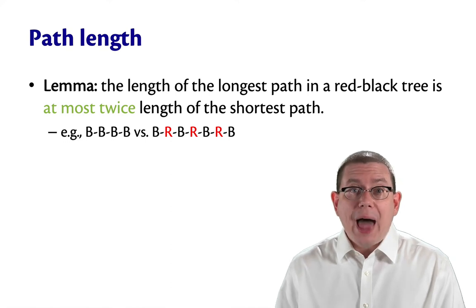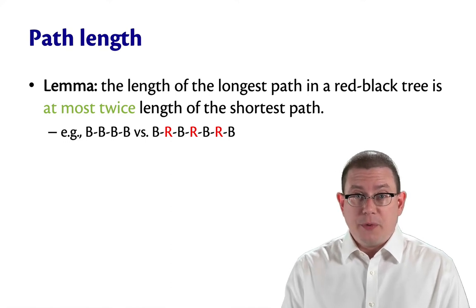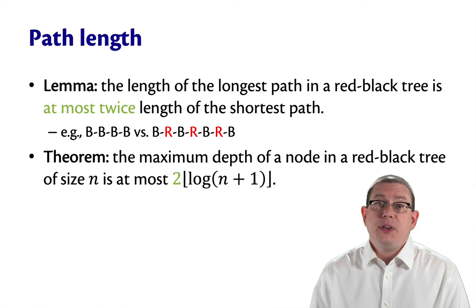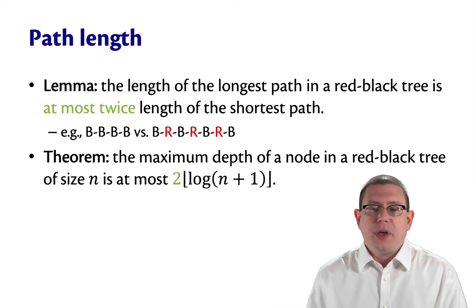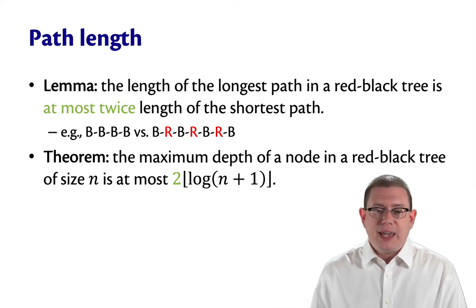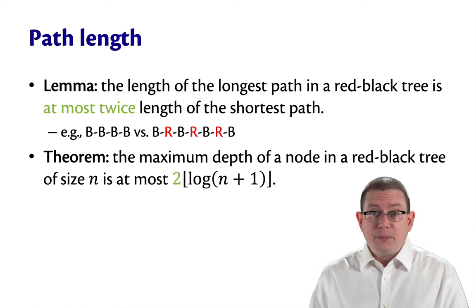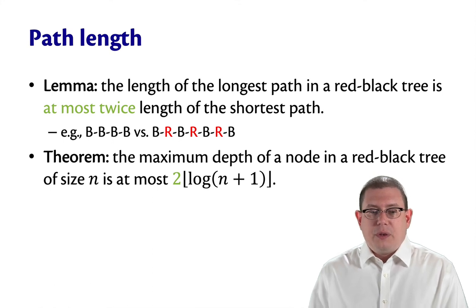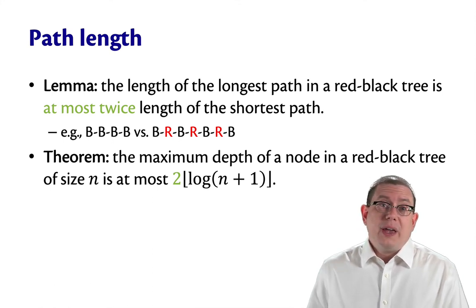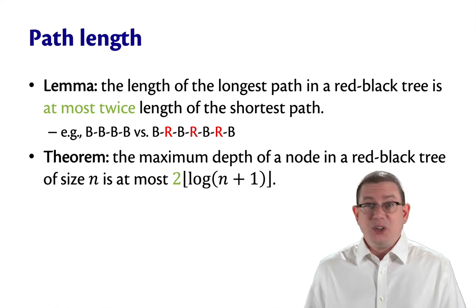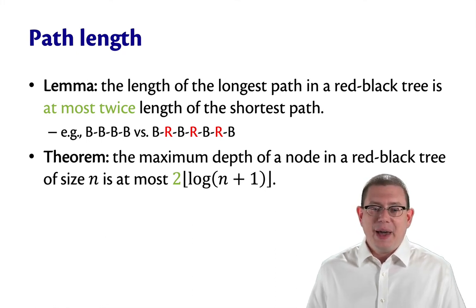This is how red-black trees achieve logarithmic performance. In fact, it's a theorem that the maximum depth of a node in a red-black tree of size n is at most two times the floor of log n plus one, where we're taking the log base two here. So since big O lets us ignore constant factors, we get to ignore that too. It doesn't really matter.